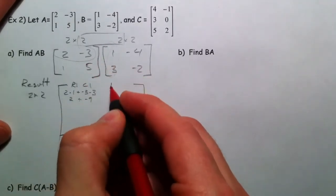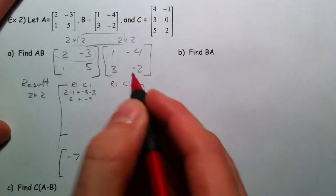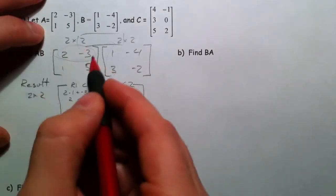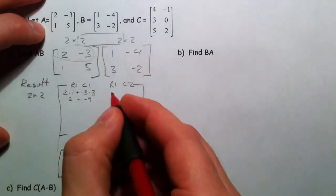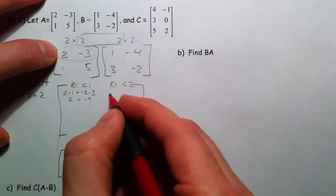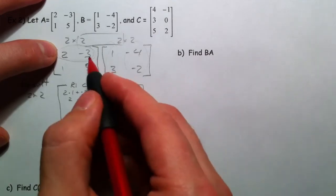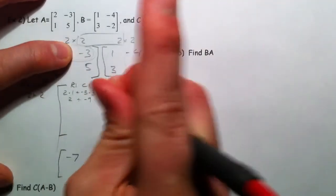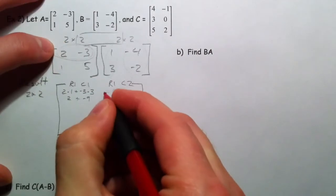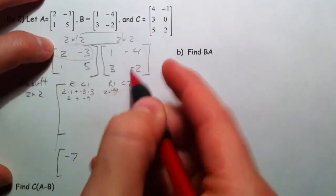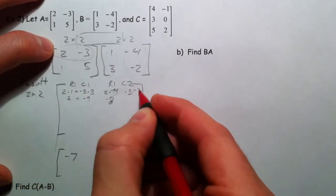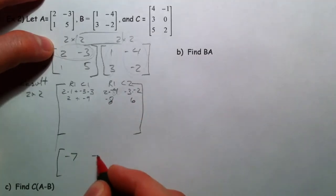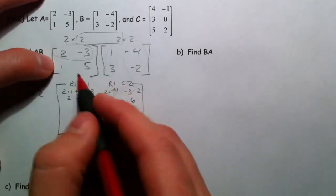Now second one. This is row 1, column 2 up here. So I'm going to take the first row and I'm going to multiply it by the second column. So the first element times the first element. 2 times negative 4 is negative 8. And actually let's take our time here. 2 times negative 4 is negative 8, and negative 3 times negative 2 is 6. So if you add those two together, you get negative 2. And moving on.